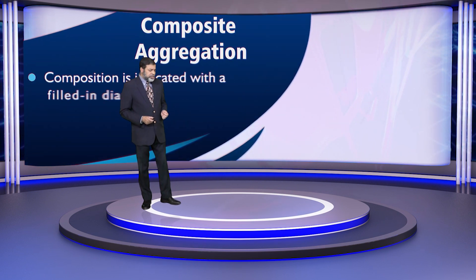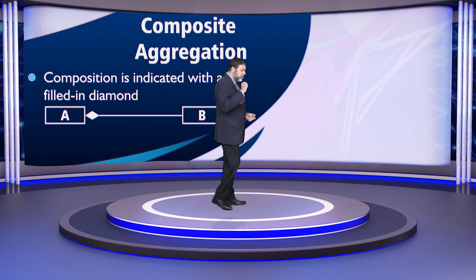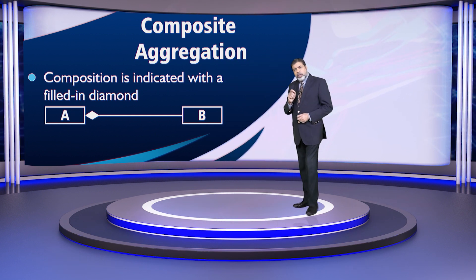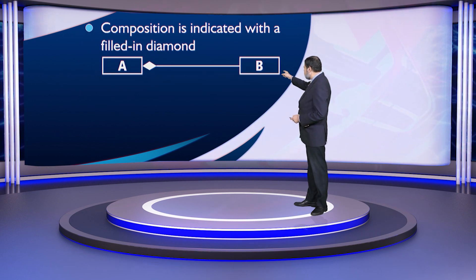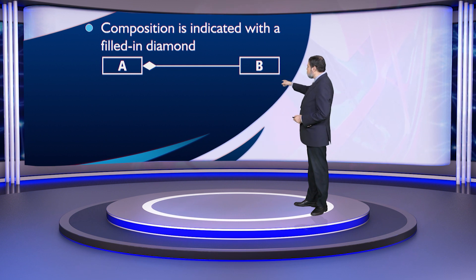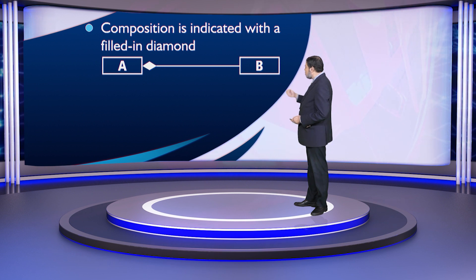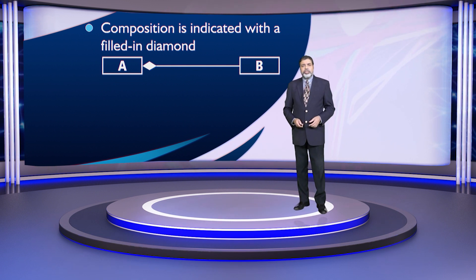Composition is indicated by a filled diamond. Hollow diamond jo tha woh simple aggregation ki baat thi, jab diamond ko hum fill kar dete hain to yeh composition hai — A is the whole and B is the part. In this particular case it is being indicated that here we are dealing with composite aggregation, ya composition ki baat kar rahe hain. To aggregation ki jab baat karenge to hum system mein composition ko hi istamal karenge, simple aggregation ko istamal nahi karenge.